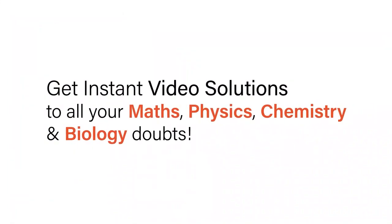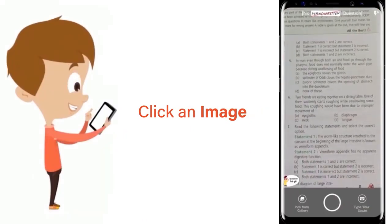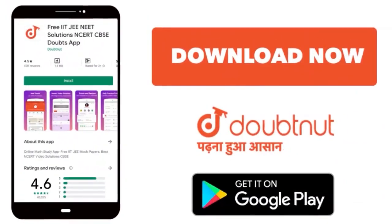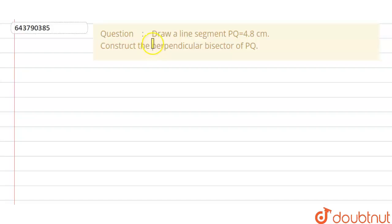With Doubtnet, get instant video solutions to all your math, physics, chemistry, and biology doubts. Just click the image of the question, crop it, and get instant video solution. Download Doubtnet app today. Hello friends, today's question is: Draw a line segment PQ of 4.8 centimeters and construct the perpendicular bisector of PQ.